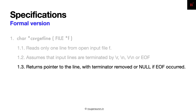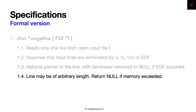The function should return a pointer to the line being read with the terminator removed, or return null if end of file occurs. The line may be of arbitrary length, so either the pointer should be returned or null if the line is too big to fit into memory.